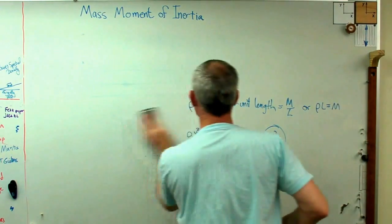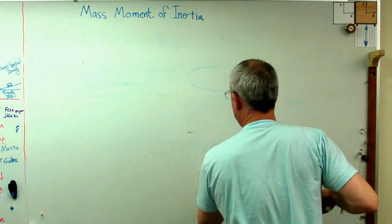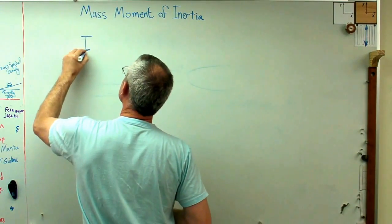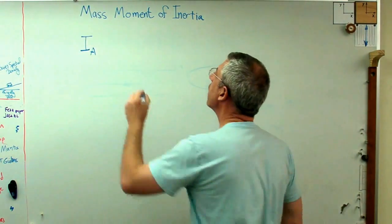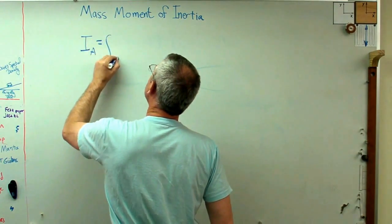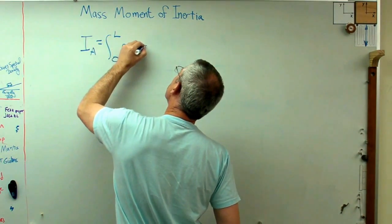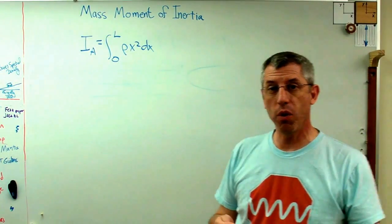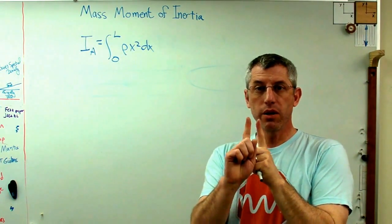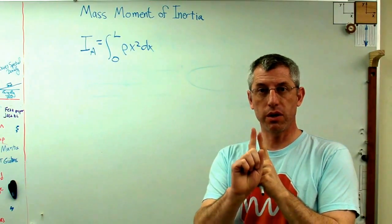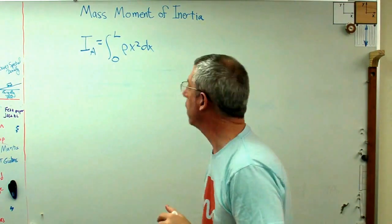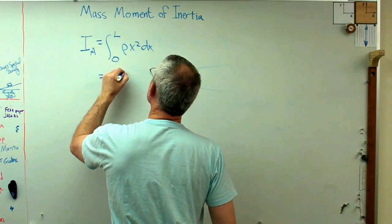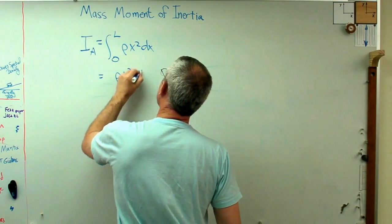This is getting kind of sloppy. Let me clean this off and I'll spend about two minutes showing you how this works. If I wanted the mass about A, which is one end of the bar, I'm going to use the exact same expression. Only now I'm going to change my integration limits because I'm not going from one end to the other, assuming that the axis of rotation is at one end.